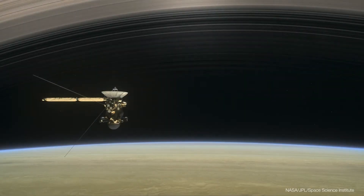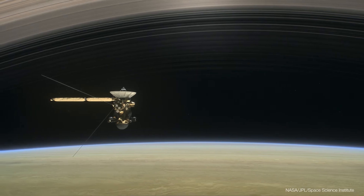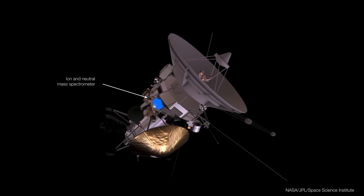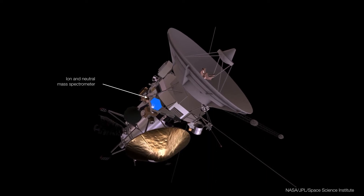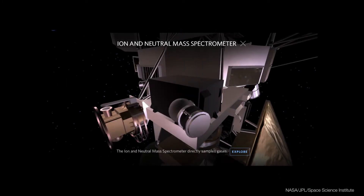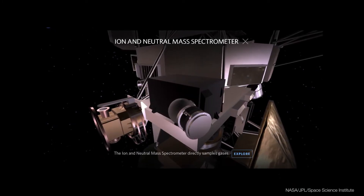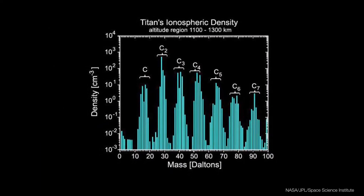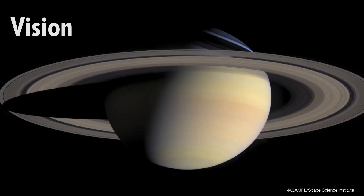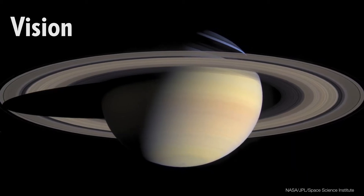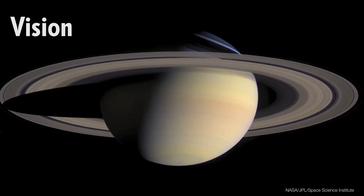Then you would discuss the Cassini mission and what it was sent to do. After that, you could get into the instrument — for instance, where it is on the spacecraft and what kind of data it's designed to collect. Only then does it make sense to talk about how it works and the kind of results it provides. Just remember, no one will understand or care about any of that without your starting with the vision.